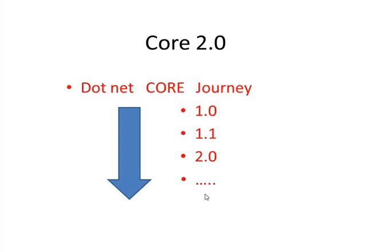A new journey of ASP.NET Core started with version 1.0. Earlier with Visual Studio 2015, you had to install the SDK separately to get .NET Core 1.0, and similarly for 1.1. But in Visual Studio 2017, ASP.NET Core 2.0 is available as a default installation. Version 2.0 was released in the second half of 2017, around August or September.